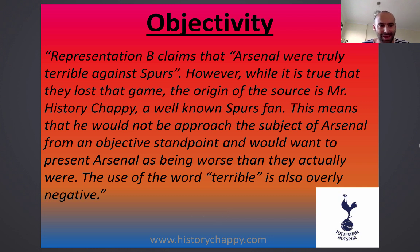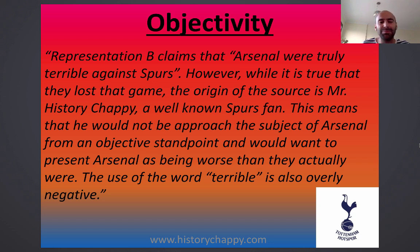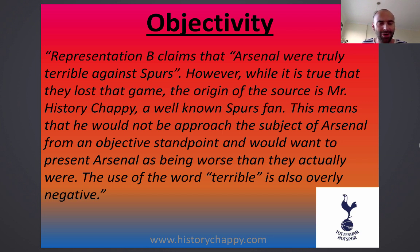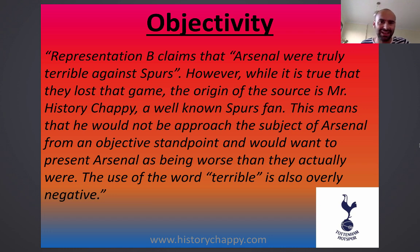Here's my example. Representation B, the mythical representation, claims that Arsenal were truly terrible against Spurs. However, while it's true that Arsenal lost that game, the origin of the source is Mr History Chappie — a well-known Spurs fan. This means he'd probably not approach the subject of Arsenal from an objective standpoint and would want to present Arsenal as being worse than they actually were. The use of the word 'terrible' in this context is also overly negative. Spurs and Arsenal fans don't tend to get on too well, so I will give a really subjective opinion with a really derogatory tone. So objectivity is the second criteria.